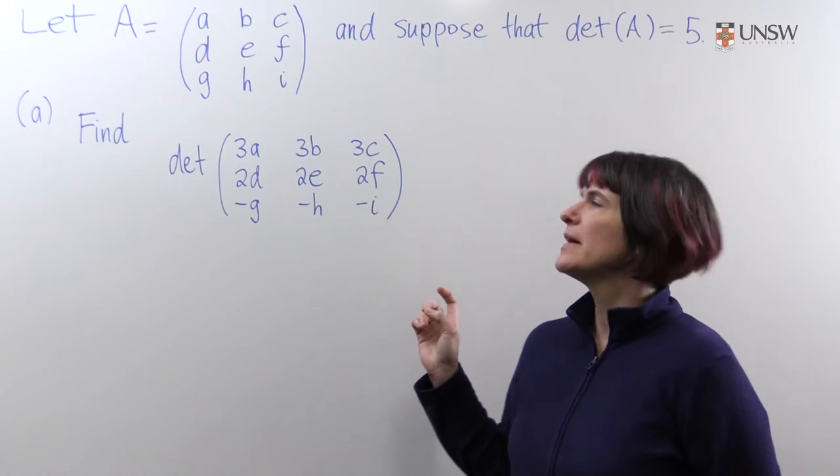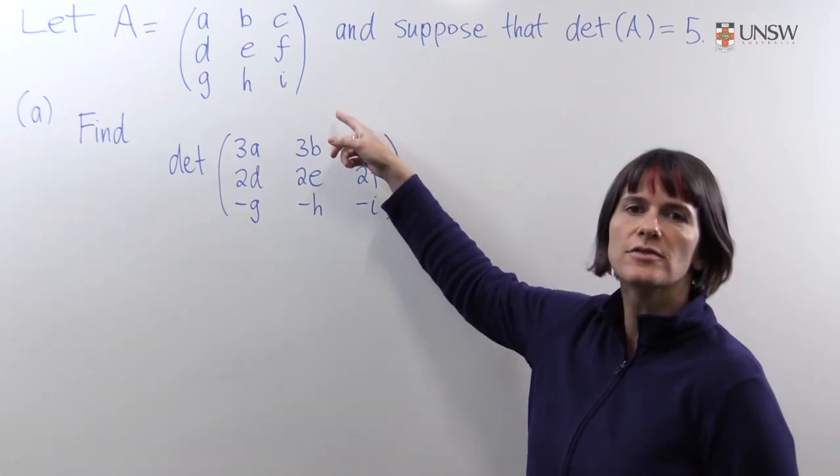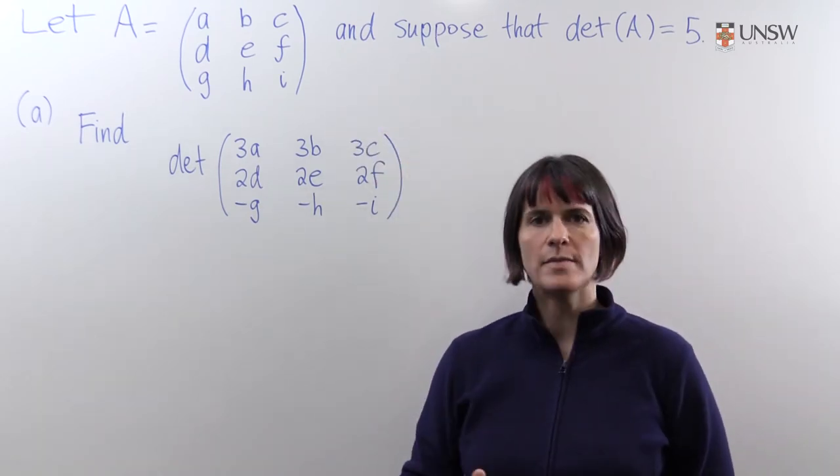Suppose we have a matrix A, it's a three by three matrix, it's got these entries as written here, and it has determinant five.